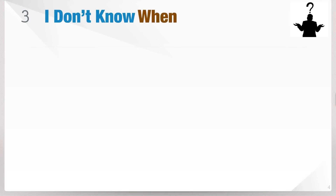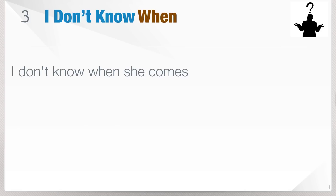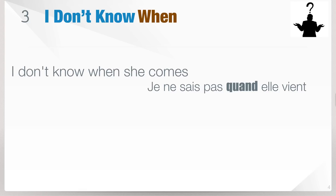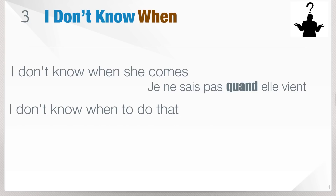The third expression: 'when.' 'I don't know when she comes' — Je ne sais pas quand elle vient. Don't forget, there is a liaison between quand and elle: the letter D becomes a T, so quand elle vient. If you want to use an infinitive form, the translation is always quand: 'I don't know when to do that' — Je ne sais pas quand faire cela.